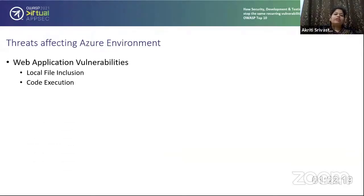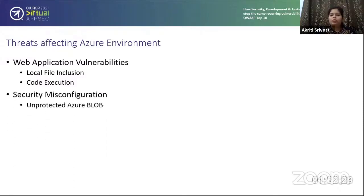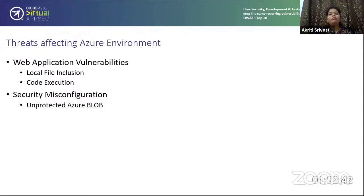Another threat affecting the Azure environment is web application vulnerabilities — local file inclusion or code execution — which again bring up issues. And then security misconfiguration, as we saw in the case of Probase: the issue was that their records were on a blob with public access, meaning anyone without authentication could access that blob. That's a misconfiguration.